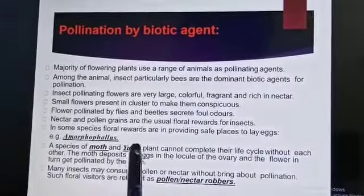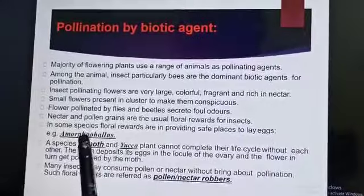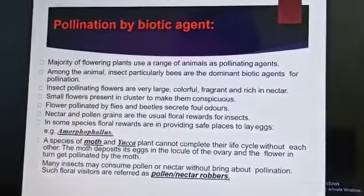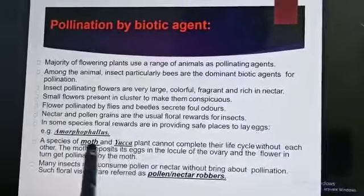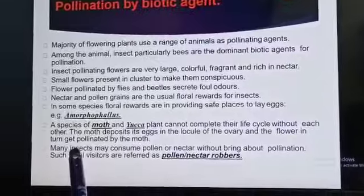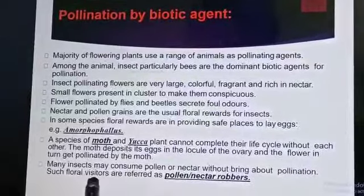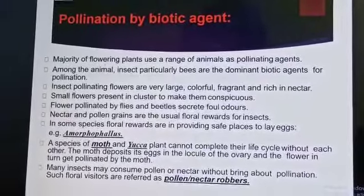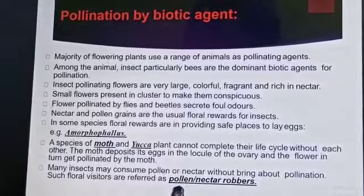A species of Moth and Yucca plant cannot complete their life cycle without each other. The Moth deposits its eggs in the locule of the ovary, and the flower in turn gets pollinated by the Moth. Many insects consume pollen or nectar without bringing about pollination — such floral visitors are referred to as pollen-nectar robbers.